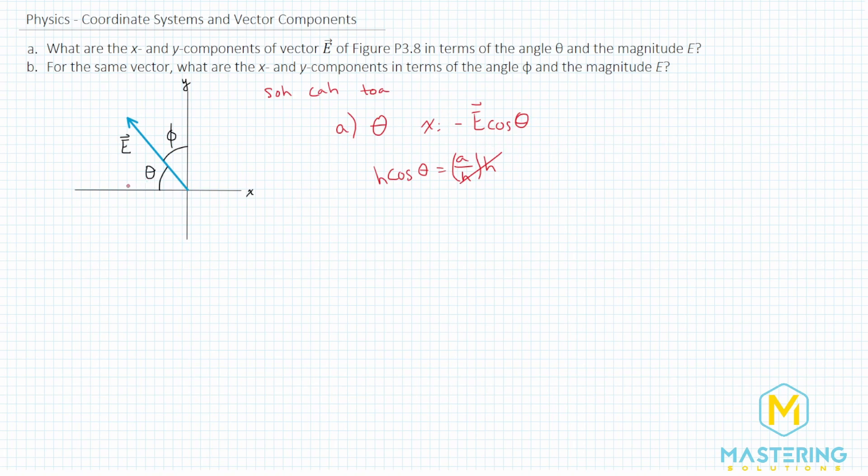The y component is the opposite to the angle, so we'll be using sine. Sine of the angle is equal to opposite over hypotenuse. We want to isolate opposite, so we'll multiply both sides by the hypotenuse. The hypotenuse is, of course, E. So this will be positive vector E times the sine of the angle theta, which gives you the y component.